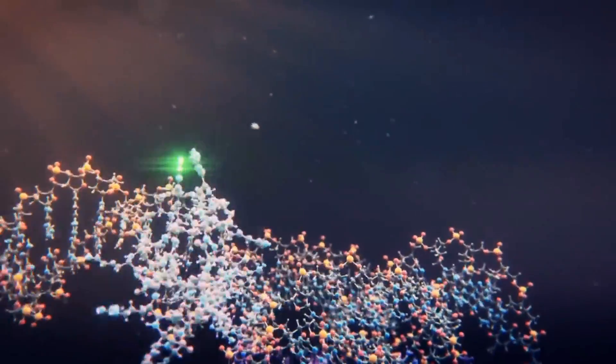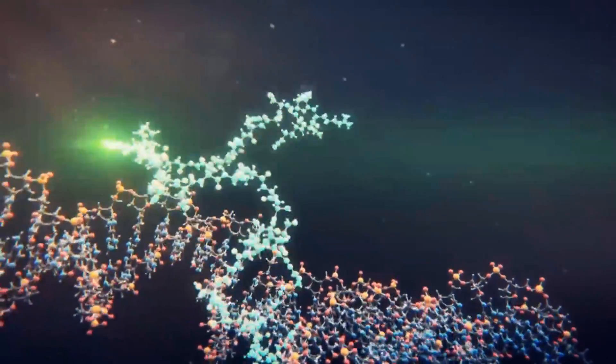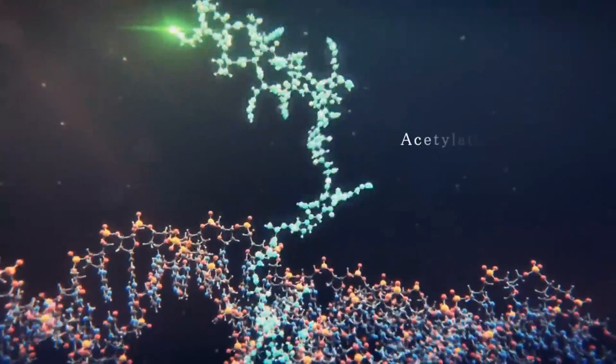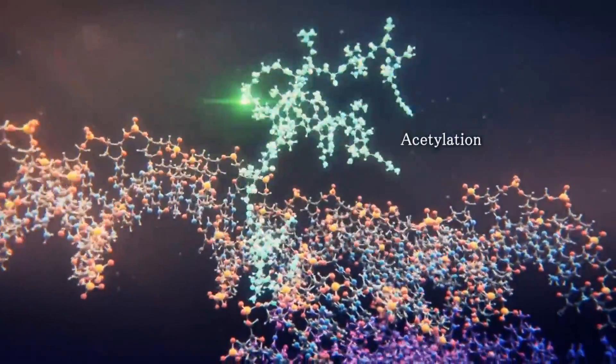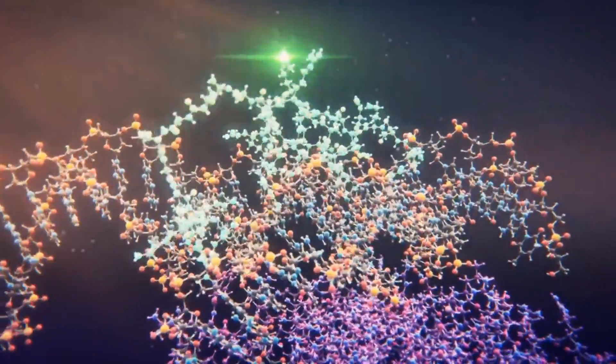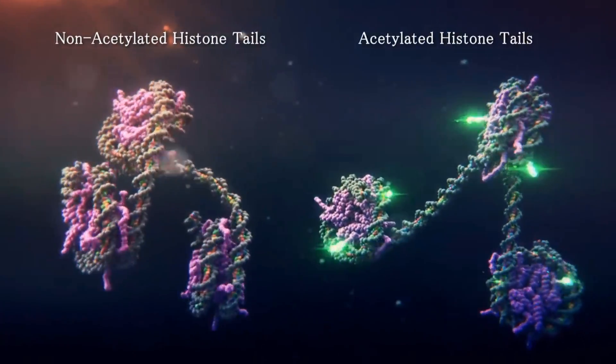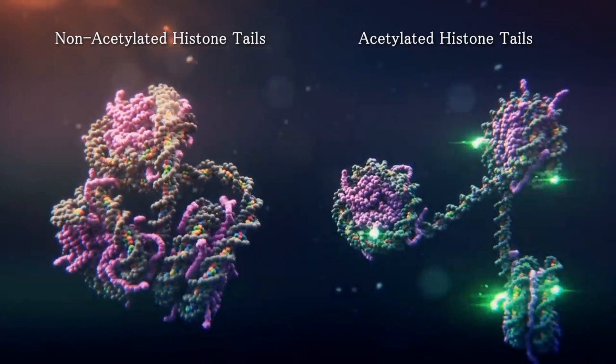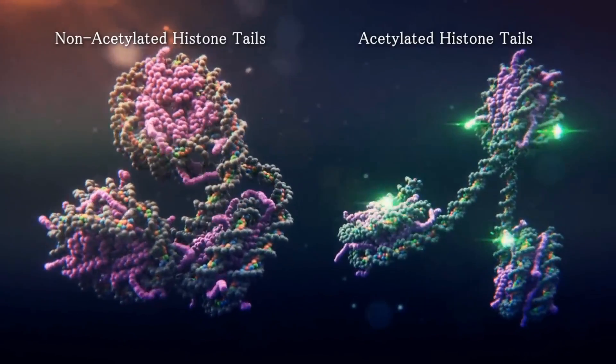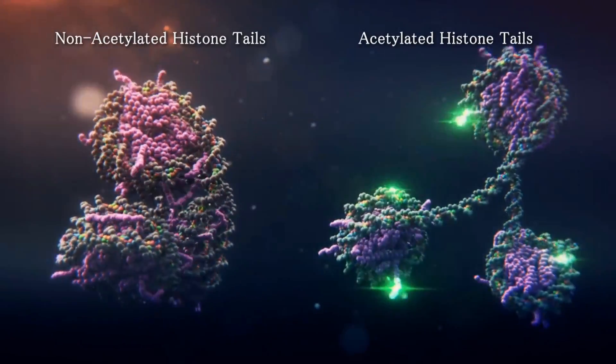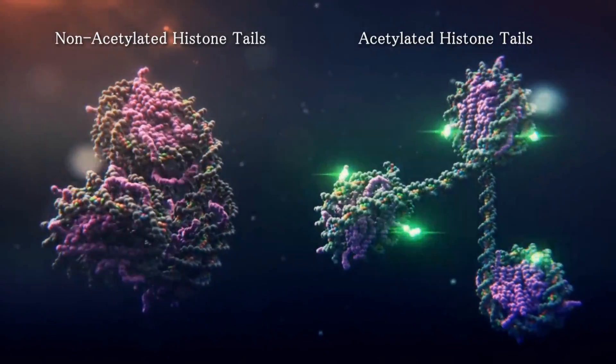When the histone tails undergo chemical modifications such as acetylation, the structure of the nucleosome changes. For instance, we know that acetylation of specific parts of the histone tails loosens the chromatin structure, making the nucleosomes less tightly packed.